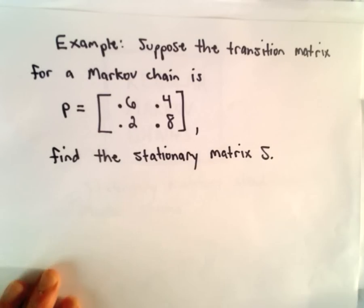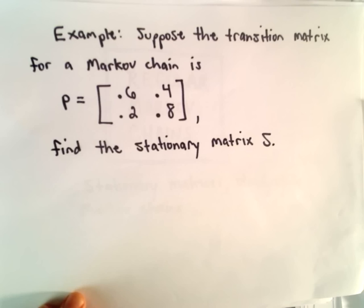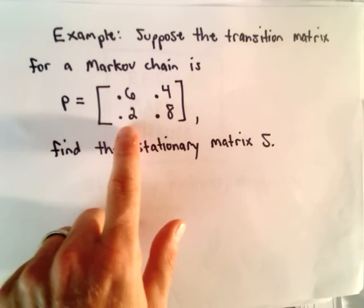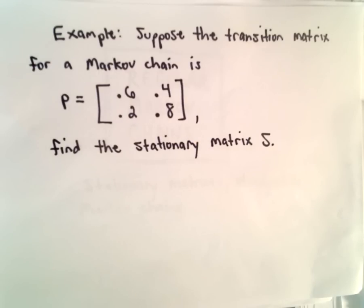Okay, so let's do an example. Let's suppose that the transition matrix for a Markov chain has entries 0.6, 0.4, 0.2, and 0.8. We're going to find that stationary matrix S.